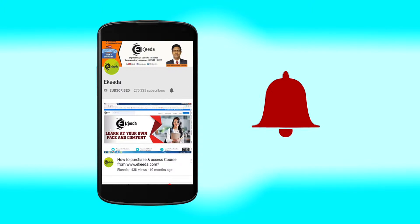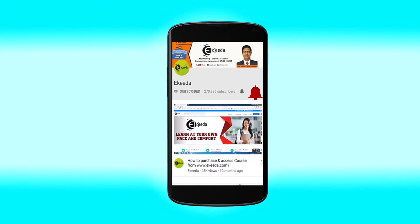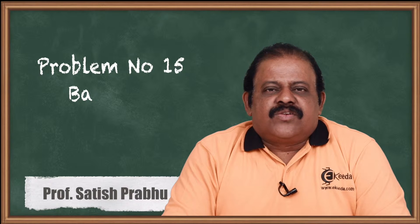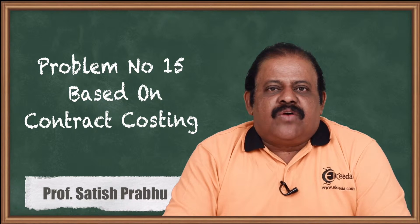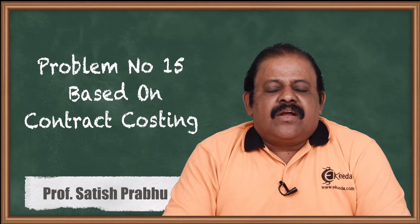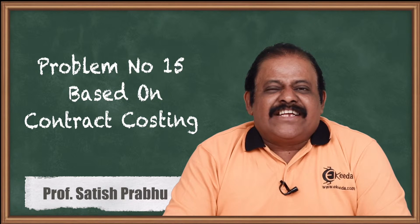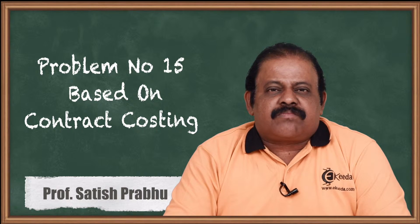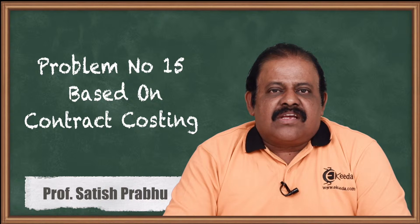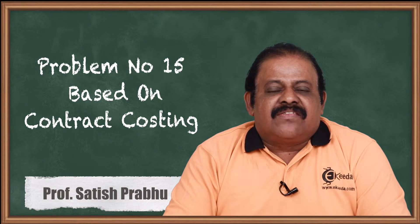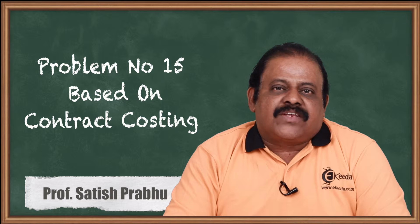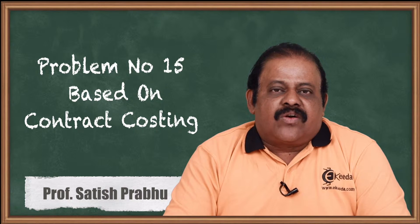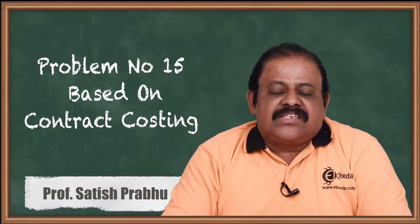Hello friends, today we will be discussing one question of contract costing where, based on a trial balance, we are required to prepare a balance sheet. The expenses are partly transferred to the contract account and partly posted to the profit and loss account, because some expenses in the trial balance do not actually belong to the contract account. Let us see how to solve such a sum.